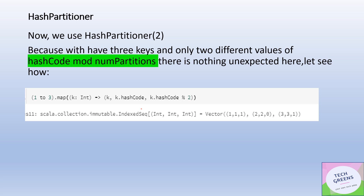We have keys one, two, and three — two elements each. The algorithm is: `k.hashCode % numPartitions`. For key one, hashCode is one and `1 % 2 = 1`. For key three, `hashCode = 3` and `3 % 2 = 1` — so both go to partition one. For key two, `hashCode = 2` and `2 % 2 = 0` — so it goes to partition zero. That is the algorithm under the hood of how hash partitioning determines the partition for each record.